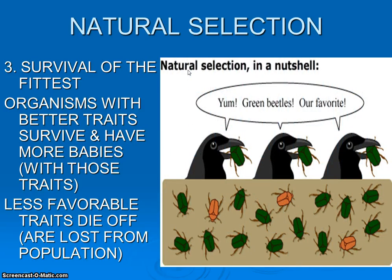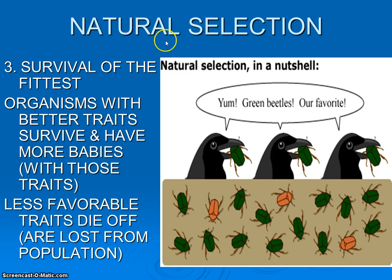Now that we've discussed natural selection and we know the three parameters of that, we just want to quickly touch on some real-world examples, as well as touch on some specific outcomes of natural selection, as far as types of natural selection.